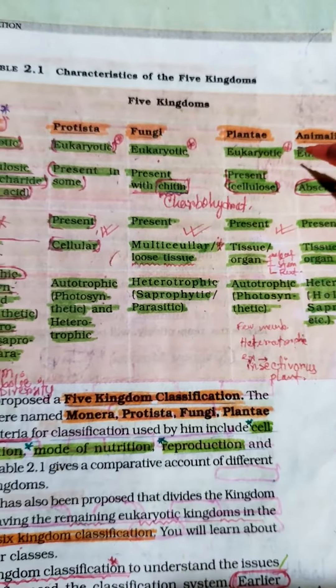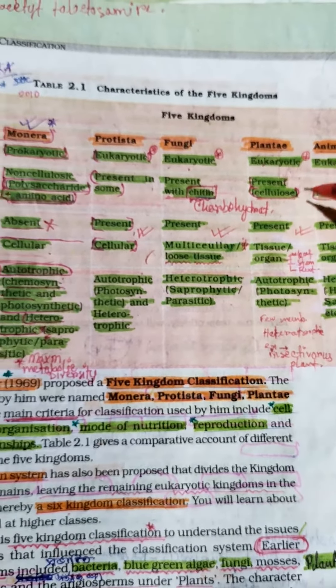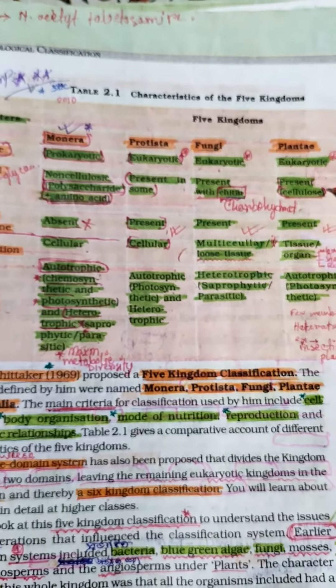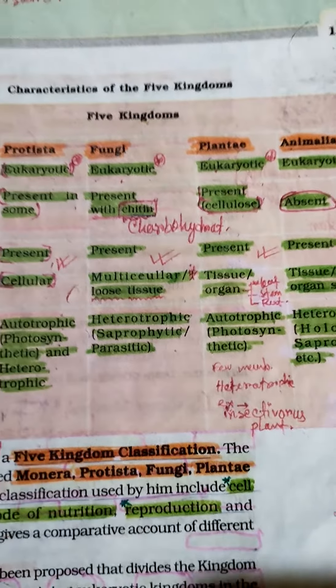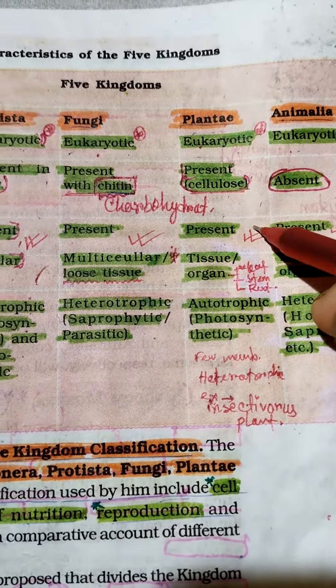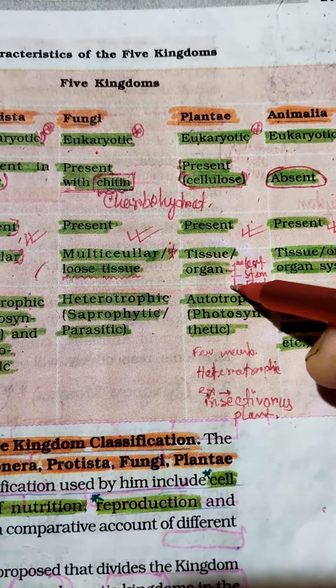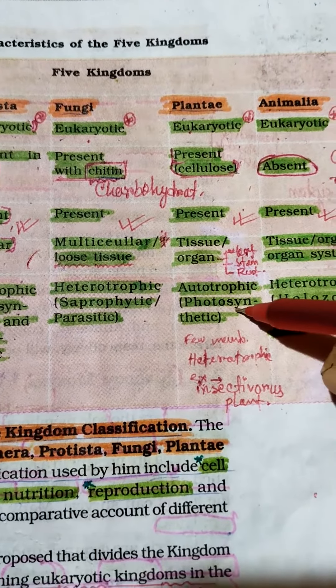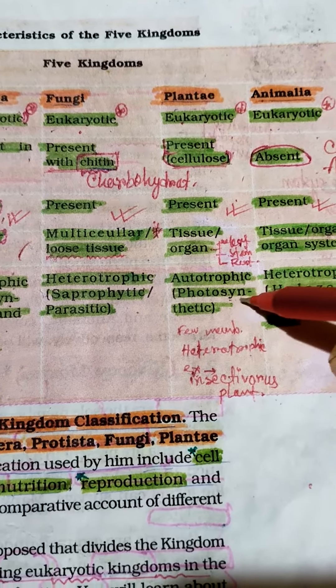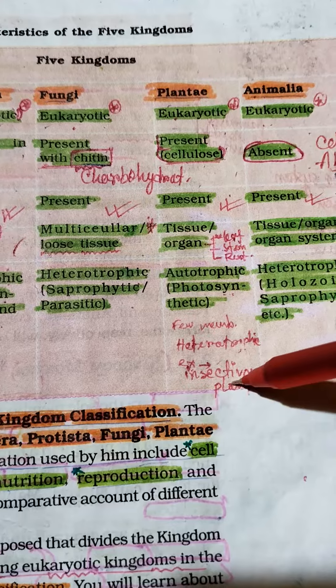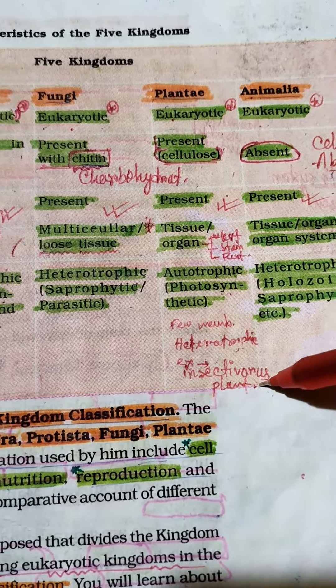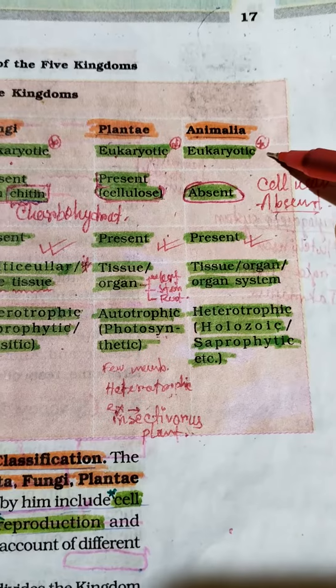Plantae have eukaryotic cell type, cellulose cell walls, nuclear membrane present, and tissue and organ organization including leaves, stems, and roots. Mode of nutrition is phototrophic photosynthetic, with some being heterotrophic such as insectivorous plants.